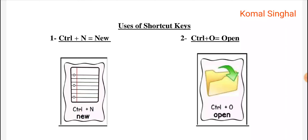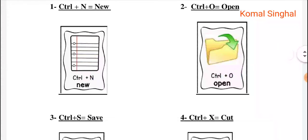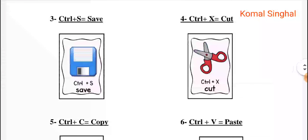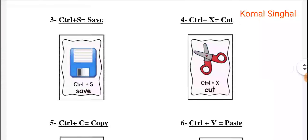Control plus O means 'Open'. The existing documents that we have already created in our computer — if we want to open any one of them, in the first key we saw how to open a new page, but here with Control plus O we can open our existing documents. So the shortcut key is Control plus O.